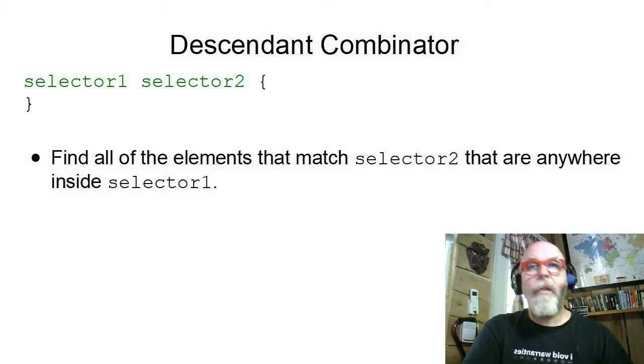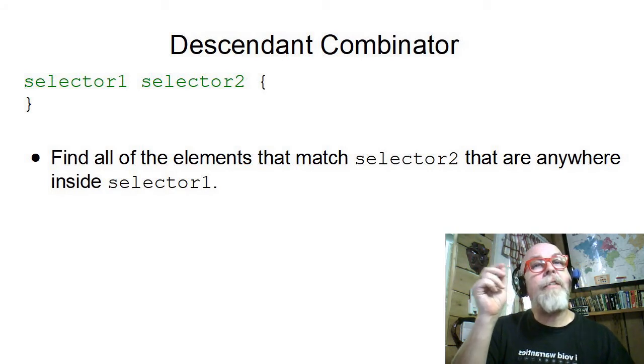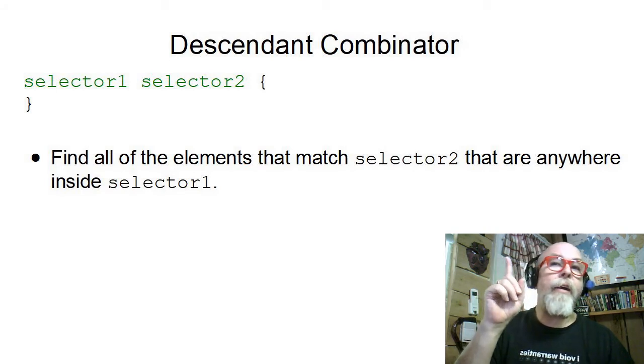The Descendant Combinator is a selector space second selector, and it finds all of the elements that match selector 2 that are anywhere inside of a selector 1. So it finds the descendants.